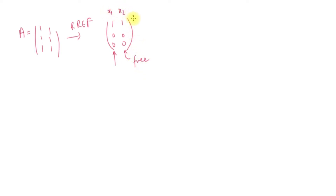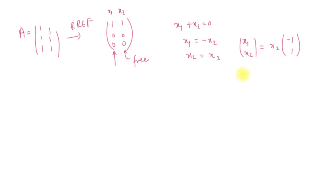We have x1 and x2. x2 equals 0, and x1 equals minus x2. x2 is a free variable. So x1 and x2 equal x2 times the vector (minus 1, 1). That is the meaning.